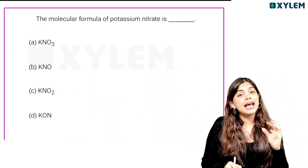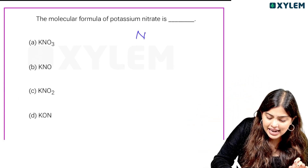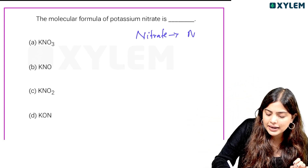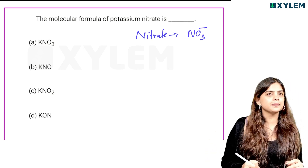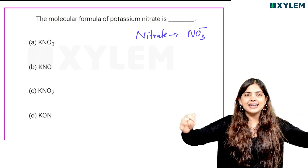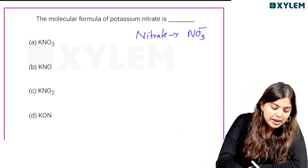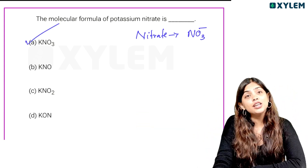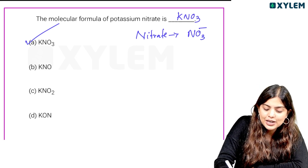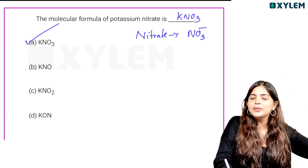Next question: the molecular formula of potassium nitrate. Nitrate is NO3 minus. Potassium is K. So potassium nitrate is KNO3. Option number 1 is correct. For reference, sodium nitrate is NaNO3.